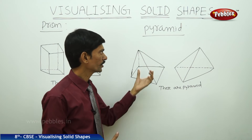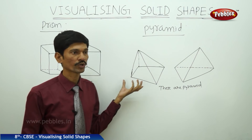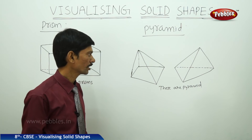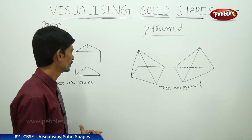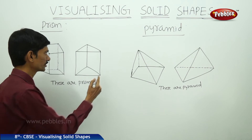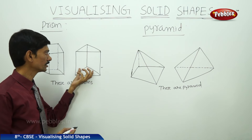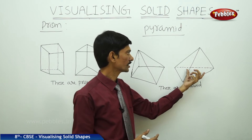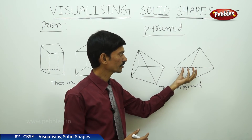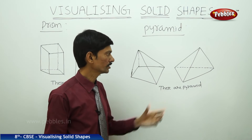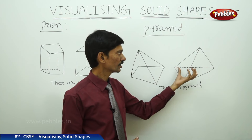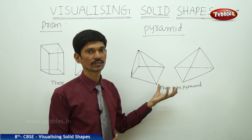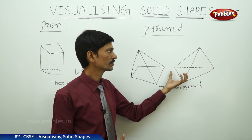A pyramid is a polyhedron in which the base is a polygon and the lateral faces meet in a common point called the vertex. A prism or pyramid is named according to the shape of its base. If the base is a triangle, it is a triangular prism or triangular pyramid. If the shape of the base is a square, it is a square prism; if the base is a regular hexagon, it is a hexagonal pyramid.